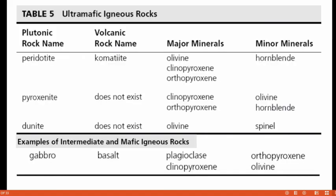This table shows the composition of peridotite, pyroxenite, and dunite. Dunite has olivine as its major mineral. Olivine occurs as a minor mineral in pyroxenite. In peridotite, olivine is a major mineral along with clinopyroxene and orthopyroxene. In intermediate and mafic igneous rocks such as gabbro and basalt, olivine occurs as a minor mineral along with orthopyroxene.